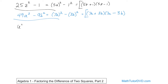Next problem: what if we have u to the fourth power minus 81 times v to the fourth power? It doesn't look like I have anything obvious here. But u to the fourth can be written as u squared squared, because 2 times 2 gives us 4, so this is exactly equal. Then 9 times 9 is 81, so we'll have 9v squared, and that will be squared. So we're using our rules of exponents — going backwards, this would be 9 squared and v to the fourth. So this is the difference of two squares.